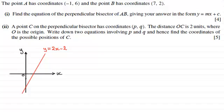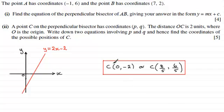Okay, welcome back then. Well, the answer, in fact, was that the coordinates of C are (0, -2), or C is (8/5, 6/5). So if you didn't get this, what I'll do is I'll show you how I went about it.